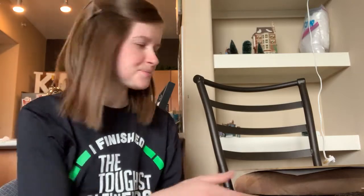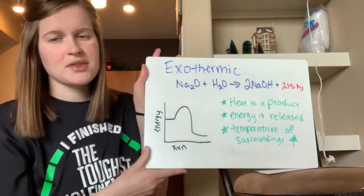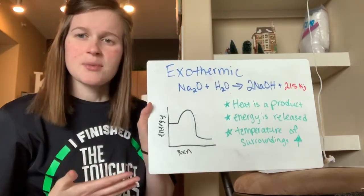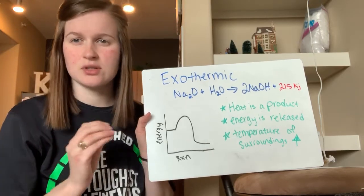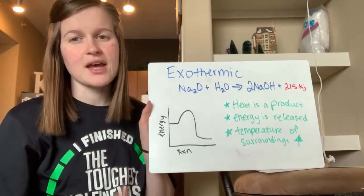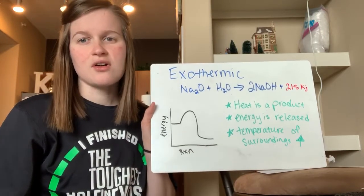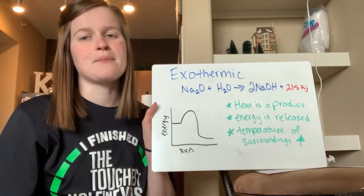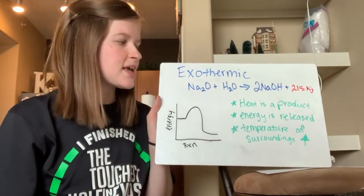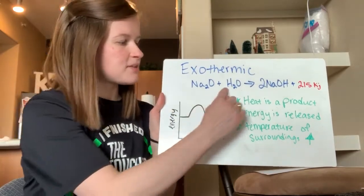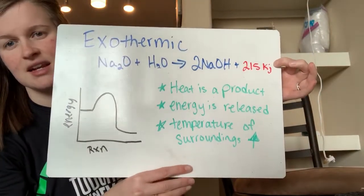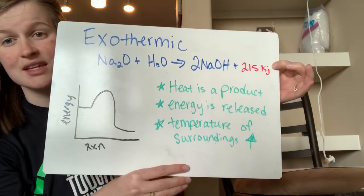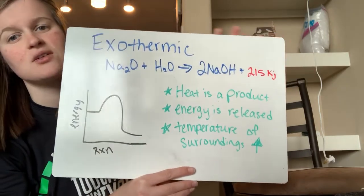I'm going to break down endothermic and exothermic using whiteboards that summarize everything you should have been learning. Starting with exothermic: in an exothermic reaction, energy is going to be released from the system into the surroundings. Your system is the chemical reaction that's happening, and your surroundings are the laboratory setting and the container it's in. You should feel a temperature difference as this happens. Here I have a balanced equation, and in red I have heat appearing as a product, because in an exothermic reaction, heat is released.